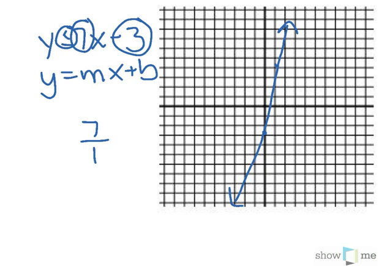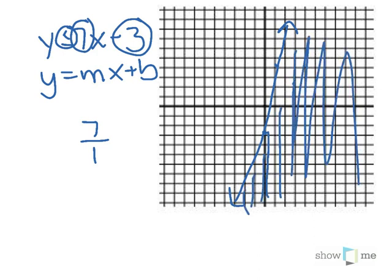And then I need to determine where to shade. It says y is less than or equal to. So I go to my y-intercept and I go below it. So that means I shade this side of the line.